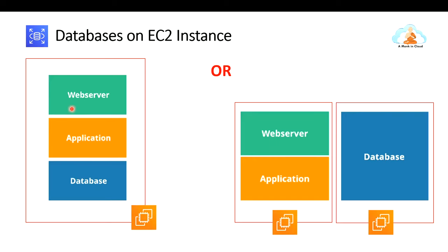In the industry, if you want to run any application, you won't run just the application — there will also be a corresponding web server and databases to store user information. For example, amazon.com is a web server and application that needs databases to store users and all the content displayed on the site. These three components — web server, application, and database — are called three-tier architecture. You can run all three on the same EC2 instance, but this is not recommended.